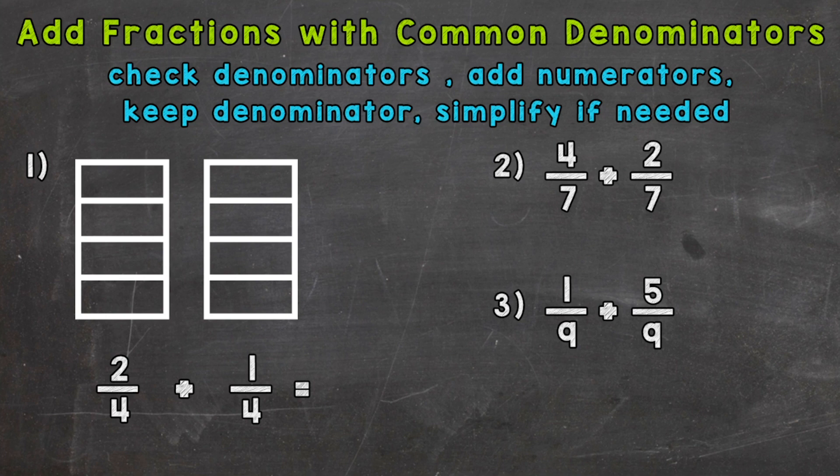So let's jump right into number one here and we have rectangles above our problem of two-fourths plus one-fourth. So that picture there is going to help us model and visualize what's happening in this problem. The first thing we need to do is check our denominators. We have a four here and a four. We need to check denominators because that's a good habit to get into when it comes to fraction problems. Because if you don't have common denominators in adding or subtracting fractions problems it takes an extra step or two. So in this case we do have a common denominator. So now we add our numerators. Our numerators are our top numbers. So two plus one gives us three.